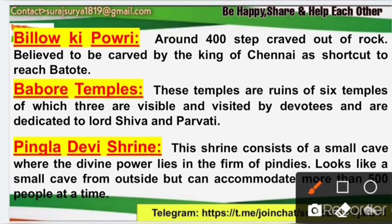Another important tourist destination is Bilu ki Poori, dear learner. Bilu ki Poori has approximately 400 steps built at the top of a hill, near Patnitop. It is believed that the Raja of Chenani had these steps constructed — about 400 steps (seerhiyan). This is also called Bilu ki Poori and it is located in Udhampur district. It was built by the Raja of Chenani as a shortcut route to reach Batote.